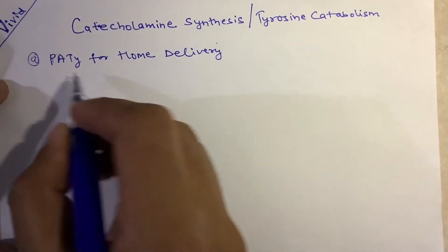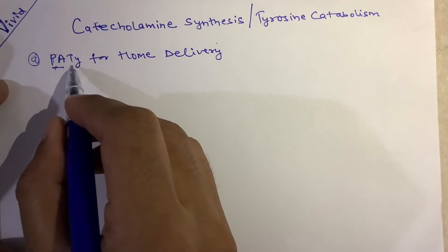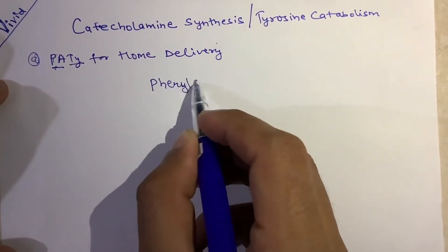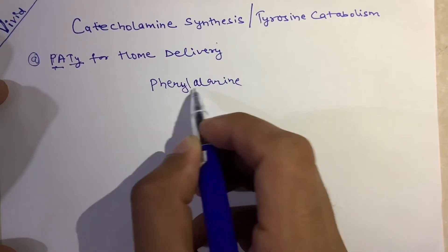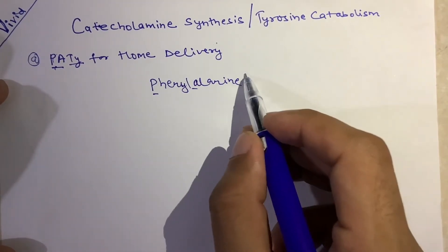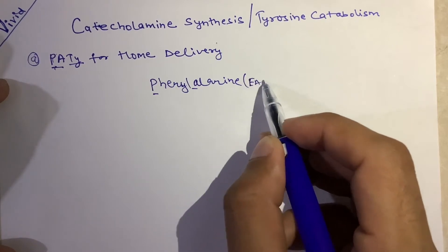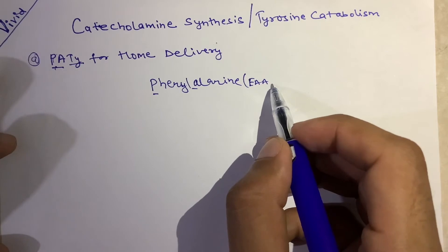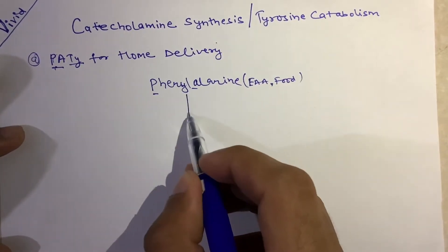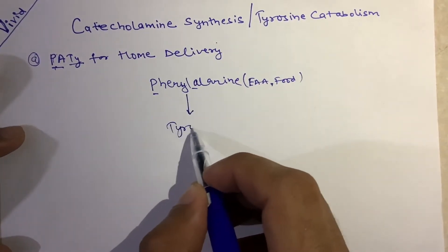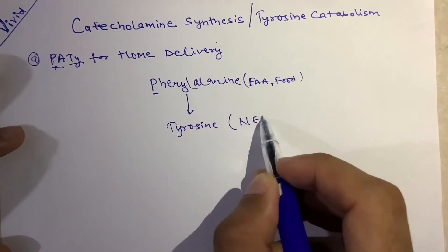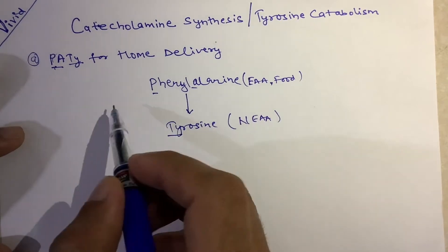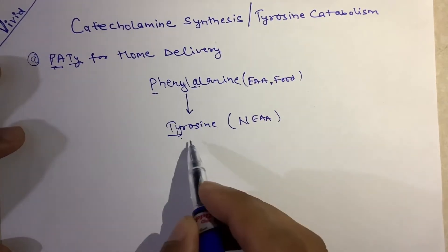Let's get started. The first word is 'patty' — PA and TY — which stands for phenylalanine and tyrosine. Phenylalanine is an essential amino acid, meaning it is not synthesized in our body and must be taken through food. It gets converted into tyrosine, which is a non-essential amino acid.